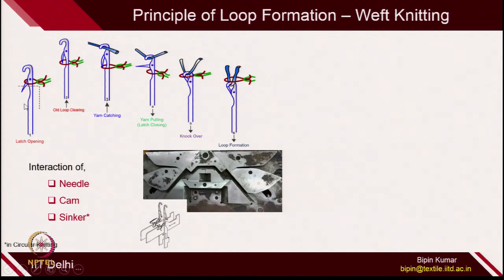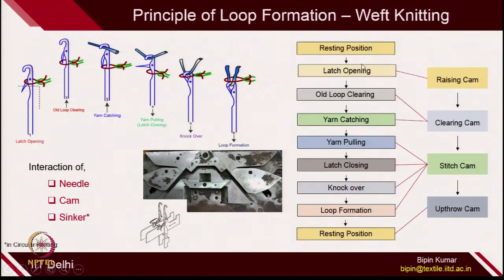We have also seen the principle of loop formation. In both weft and warp knitting, it remains almost the same, because we use the needle in the formation of loops. To form new loops, the old loops must come out from the latch and head part, then the new yarn should be cast on, and the old loop should be knocked out from the needle. This is the principle of loop formation in weft knitting. To do this function, the needle interacts with the cams. The path has been created, and the needle butt follows the path of the cams, due to which loops are generated. The needle starts from the resting position, then the latch gets open because the needle butt interacts with the raising cam.